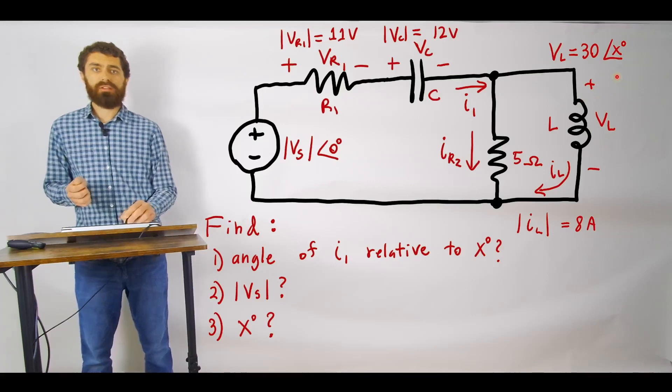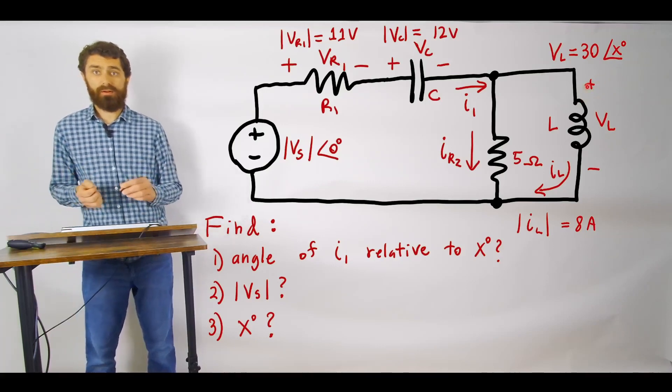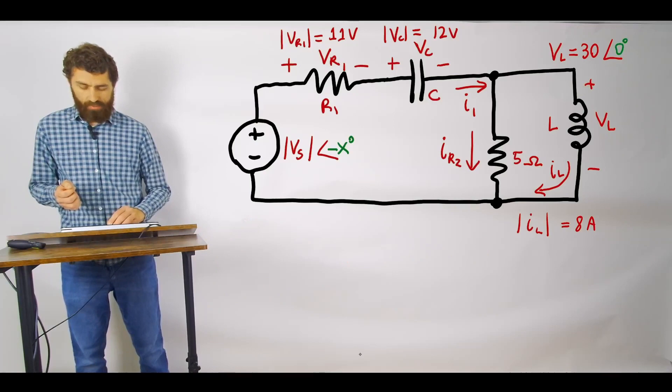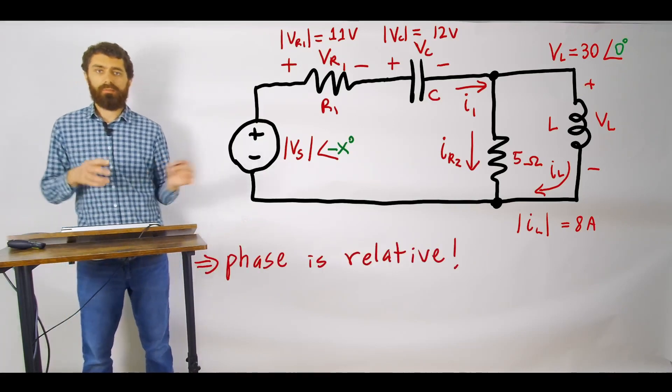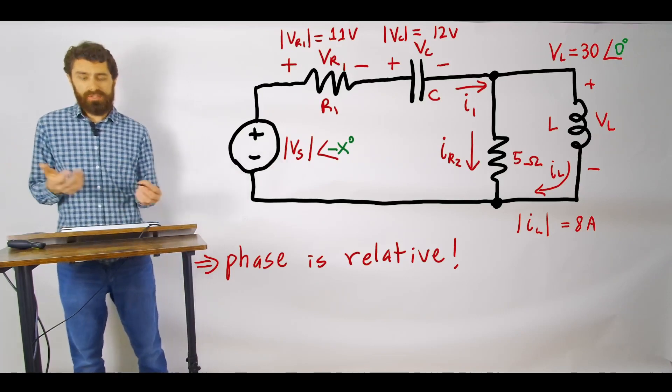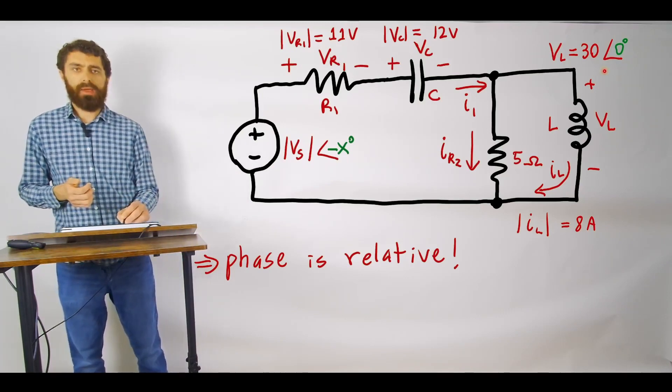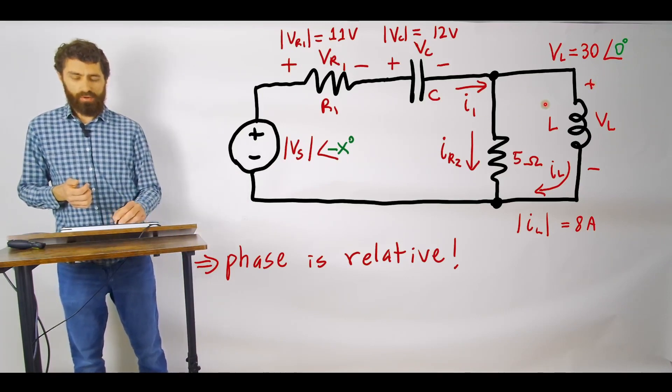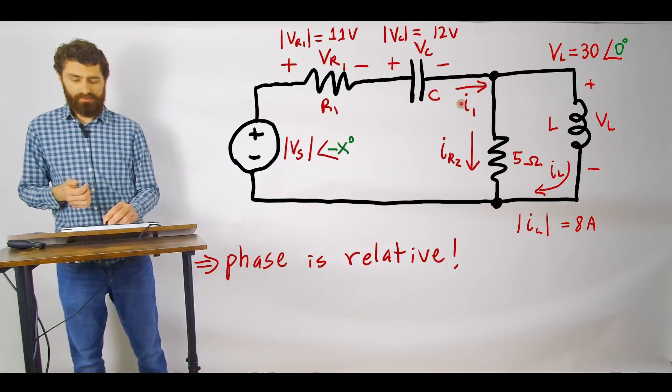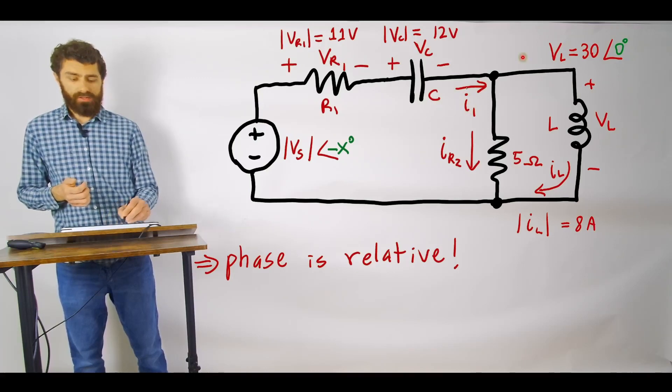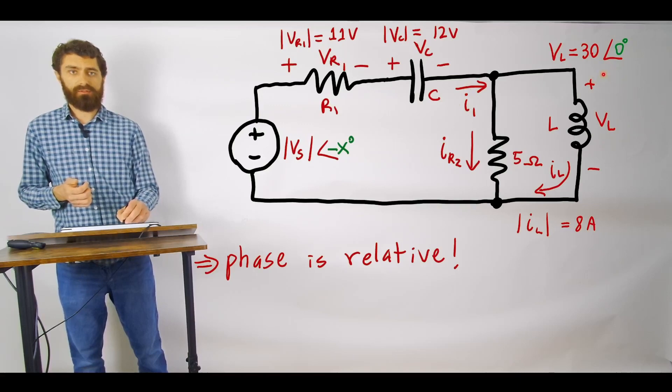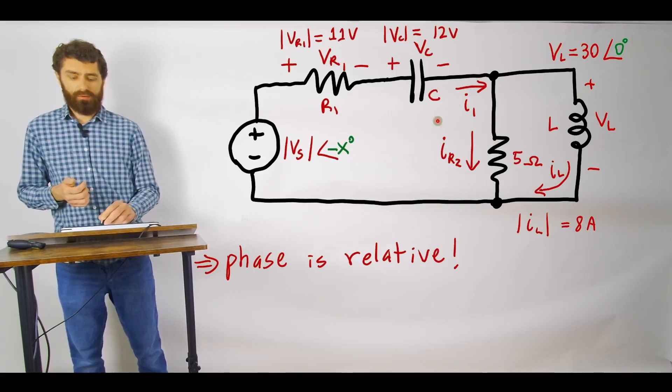But the point is it's the relative phase that matters, so when I'm solving this problem I went ahead and I just shifted the phase back. And the reason I did that is just to make our math a little bit easier when we're trying to find the phase of I1. And if we find the phase of I1 then that will basically be the phase angle relative to this 0 degree phase angle that we're looking for.